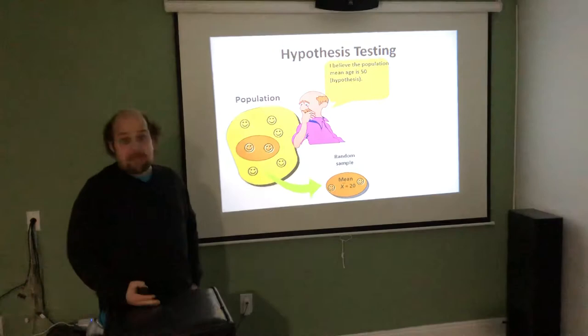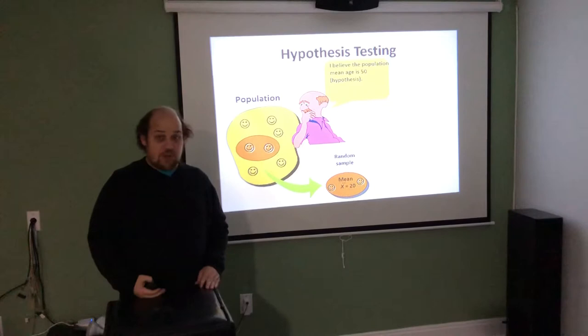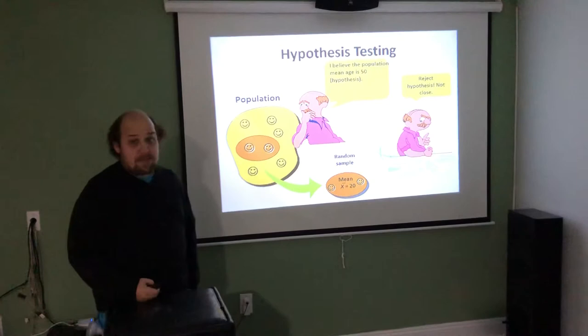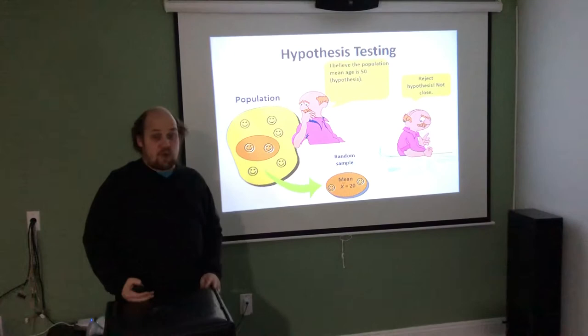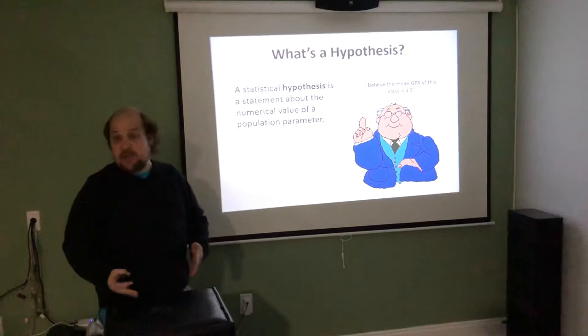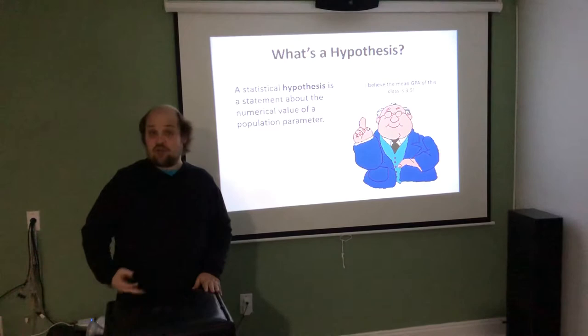If the actual population had an average age of 50, the chance that we take a sample and its average age was 20 is very low. For that reason, we're able to reject the hypothesis that the mean age is 50. Essentially we set up something that was obviously false — the average age in a college class is not 50 — and we were able to gather statistical evidence from the sample to show that it is false.